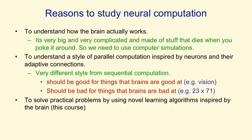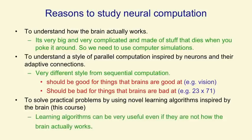A third reason, which is the relevant one for this course, is to solve practical problems by using novel learning algorithms that were inspired by the brain. These algorithms can be very useful, even if they're not actually how the brain works. So in most of this course we won't talk much about how the brain actually works. It's just used as a source of inspiration to tell us that big parallel networks of neurons can compute very complicated things.